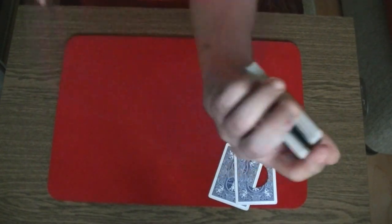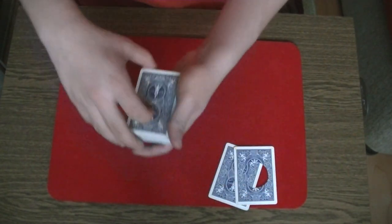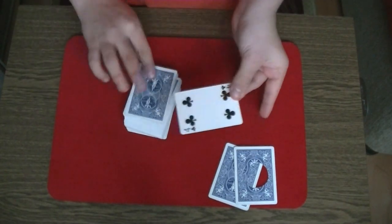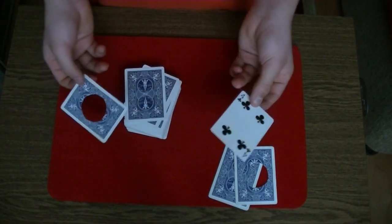Put the selection on top of the gimmick, catch a break, like so, and control the bottom pack to the top. So now you have your selection and the gimmick card on top of the pack.